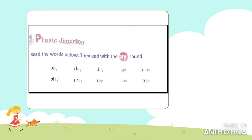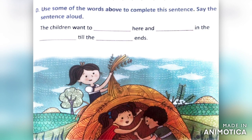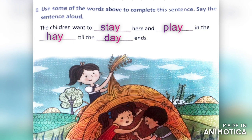Now we'll do an exercise related to this. We have to use the words we just learned and fill in the blanks. The children want to stay here and play in the hay till the day ends. The meaning is: the children want to stay here and play in the dried grass until the day is over.